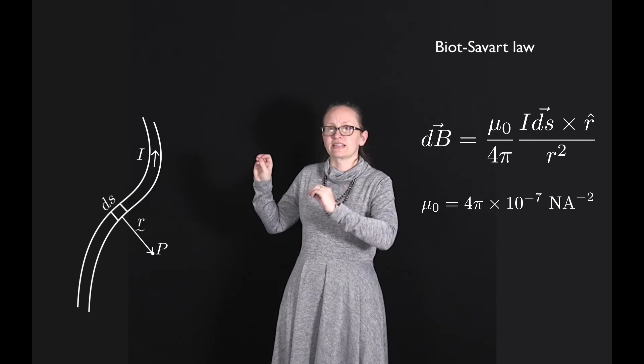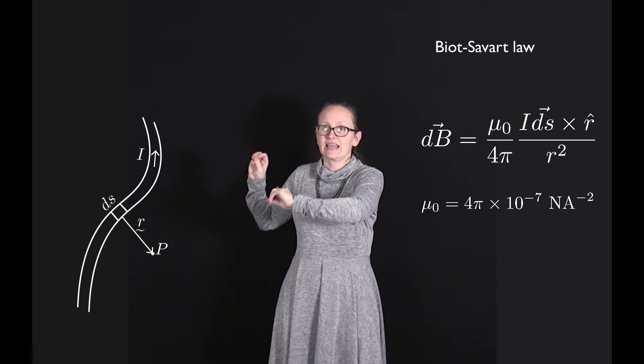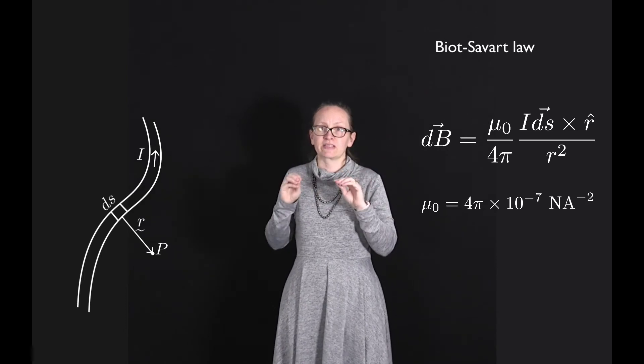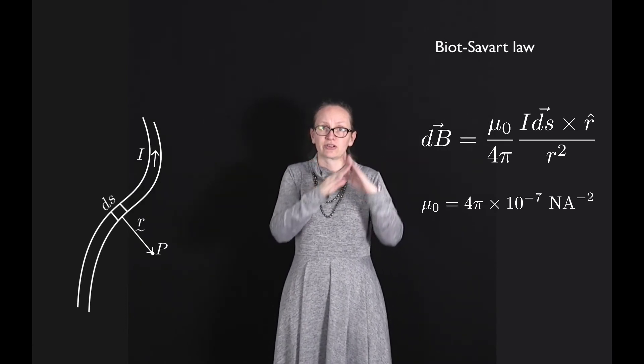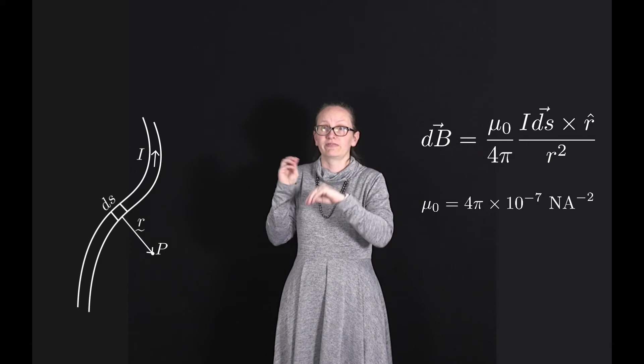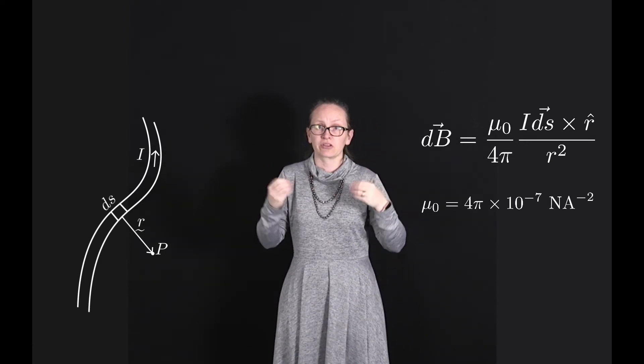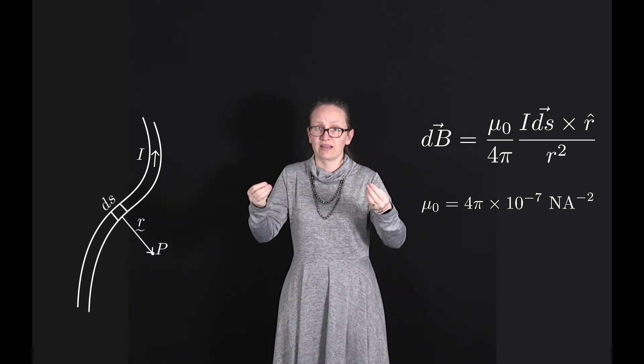r is the distance between the point ds and the point p and in this equation we've split it into a unit vector to indicate the direction pointing from ds to p and then on the bottom we've got the magnitude squared. So this is another of the inverse square law.